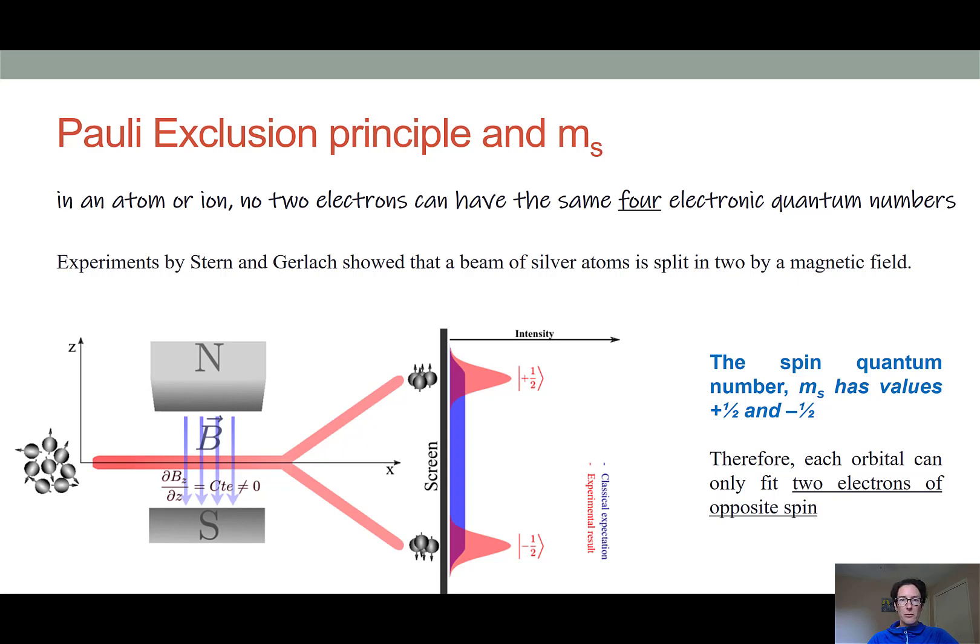So if the Pauli exclusion principle says that no two electrons can have the same four electronic quantum numbers, that means that in degenerate orbitals, where we have the same n and l values and then different m sub l values, each of those m sub l orbitals can contain two electrons, one with a positive one half spin and one with a negative one half spin. So this links back to what I was saying in the earlier video, in that each orbital can accommodate only two electrons.